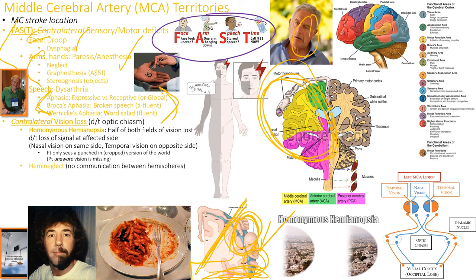Graphesthesia means you cannot feel when someone's writing on you — like if your spouse draws hearts on your hand, you can't feel that. Stereognosis means you cannot recognize what your hands are touching. If I put my hand in my pocket and feel keys, I know they're keys because of memory of what they feel like. You can understand what it is without visual information — just based on touch. Your hand has so many sensors on it, which is why so much homunculus space is dedicated to the hand.